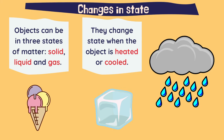Now, let's have a look at the changes in state. Objects can be in three states of matter: solid, liquid and gas. And they change state when the object is heated or cooled.